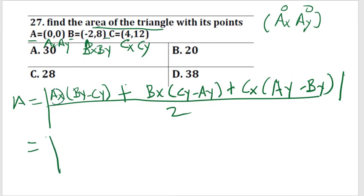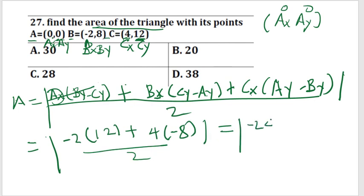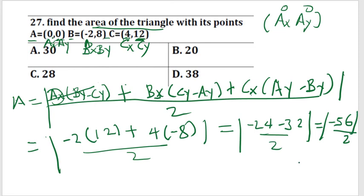Substituting the values: ax = 0, so the first term is zero and we can ignore it. Then bx = −2, and (cy − ay) = 12 − 0 = 12, giving −2 × 12 = −24. Next, cx = 4, and (ay − by) = 0 − 8 = −8, giving 4 × (−8) = −32. So we have |−24 − 32| / 2 = |−56| / 2 = 56 / 2 = 28. The area of the triangle is 28. The formula is key — this is coordinate geometry.